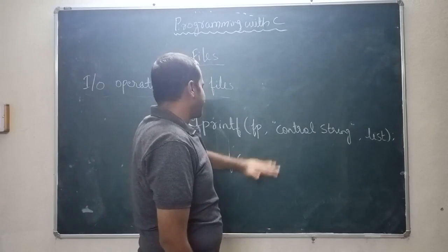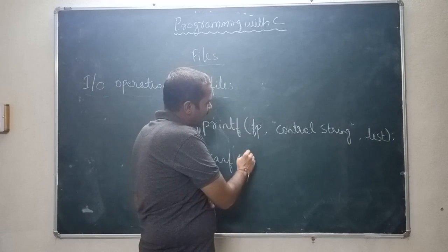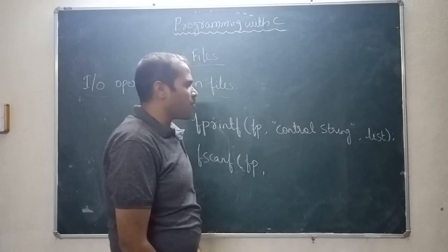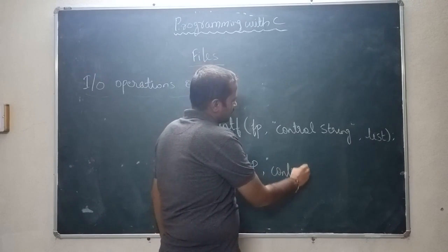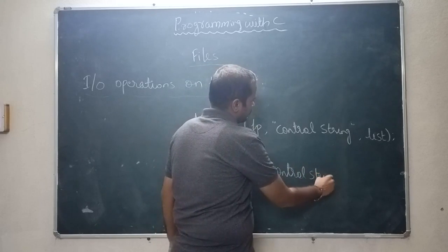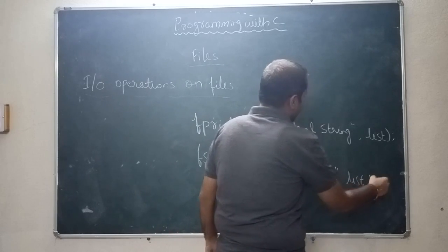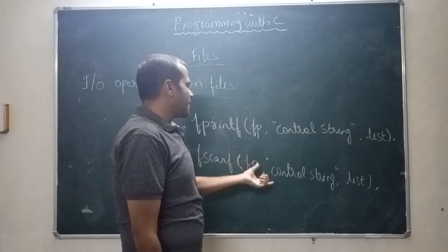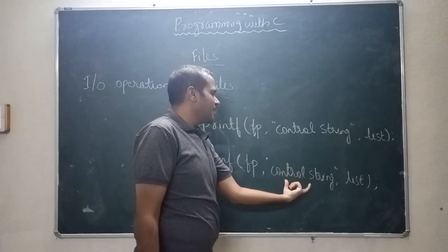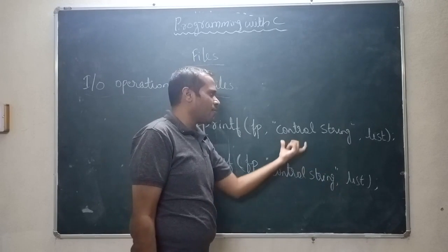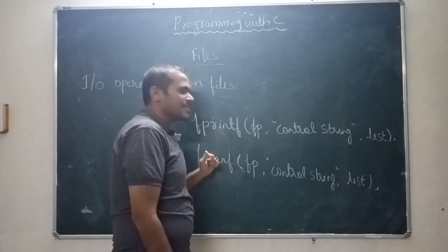The next function is fscanf. Same as scanf, but it takes one more parameter which is the file pointer, followed by the control string and the list. Remember, the syntax is the same, but the operation will be different. The control string and list will differ from printf. Let us discuss one simple example.